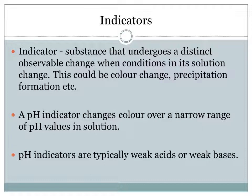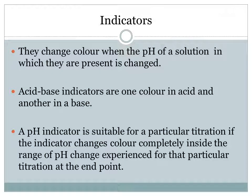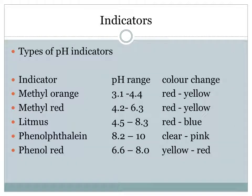What we want to look at in particular today is a pH indicator. A pH indicator changes color over a narrow range of pH values in solution. pH indicators are typically weak acids or bases — they change color when the pH of the solution in which they are present is changed. Acid-base indicators are often one color in an acid and a different color in a base. A pH indicator is suitable for a particular titration if the indicator changes color completely inside the range of pH change experienced for that titration at the end point.